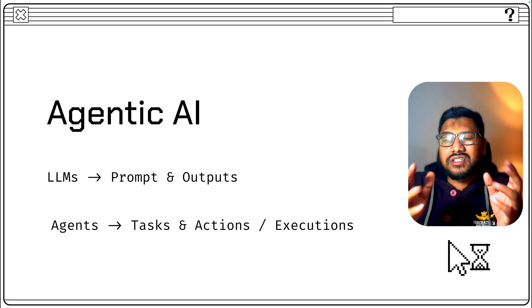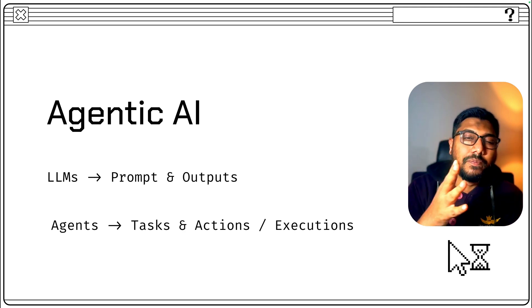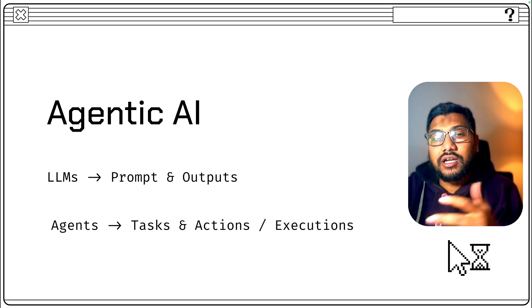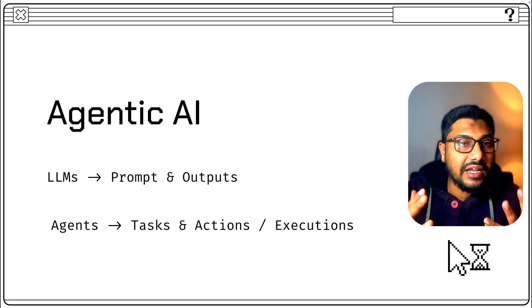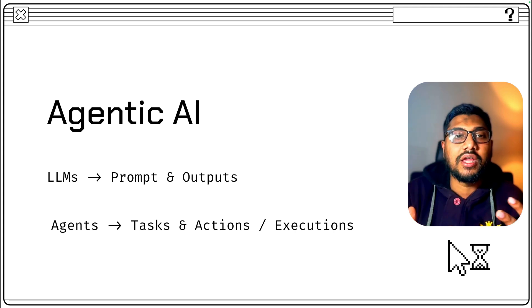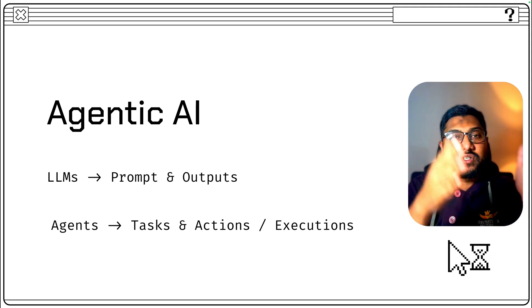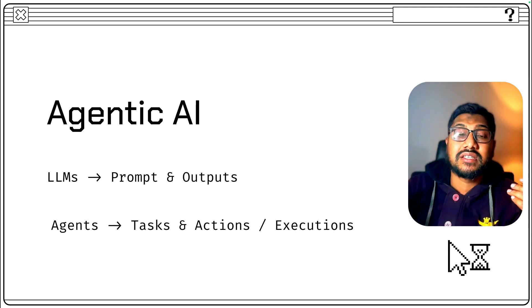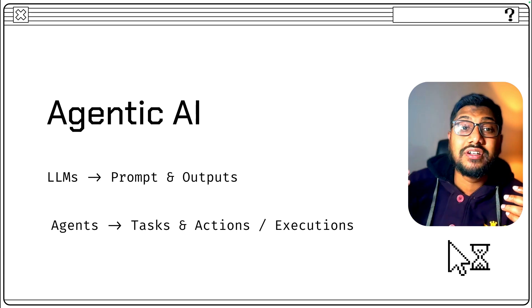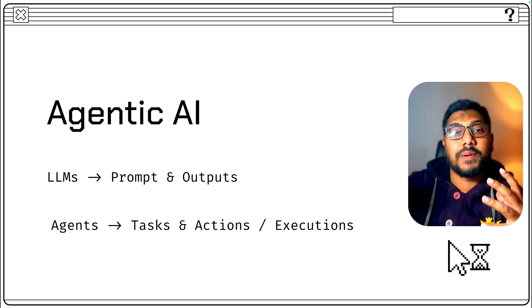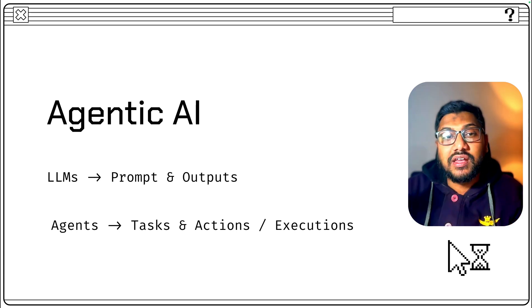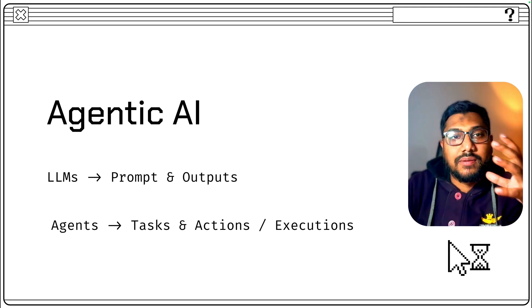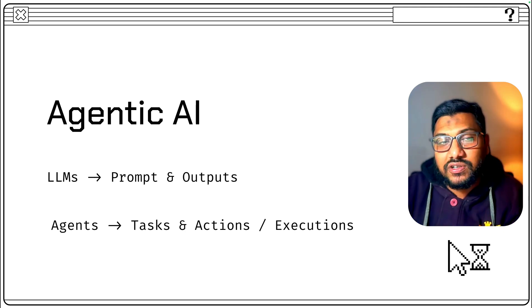There is also a slight difference between a typical workflow and an agent. A typical workflow is completely designed by a human being — this happens first, this happens second, this happens third. But an agent is supposed to be more dynamic. That means irrespective of what workflow a human being has designed, agents are supposed to mix and match and then do certain things.